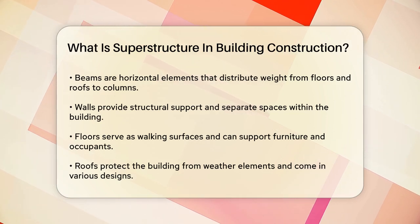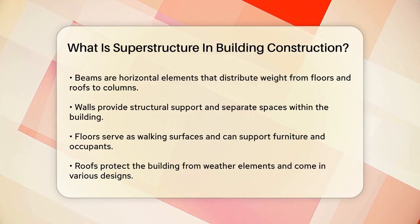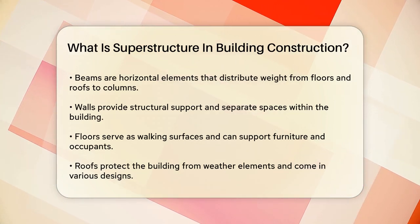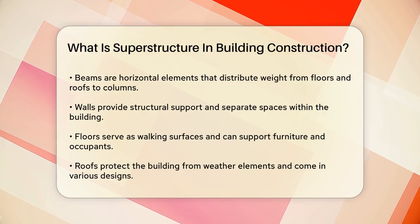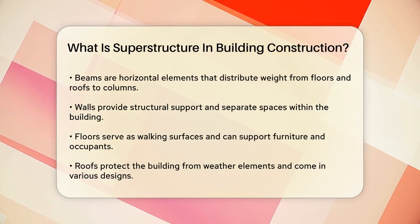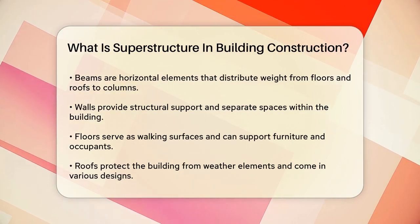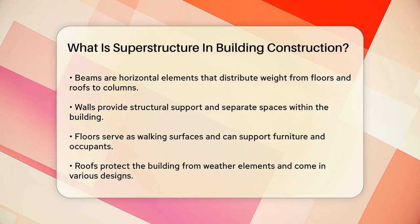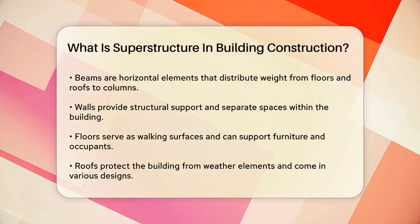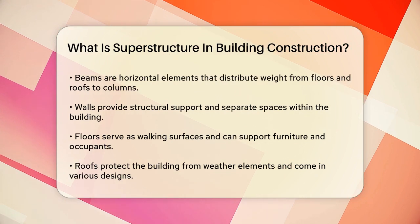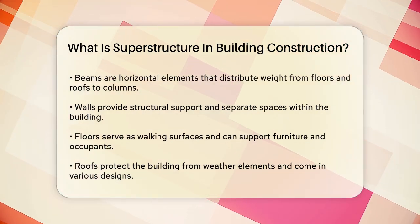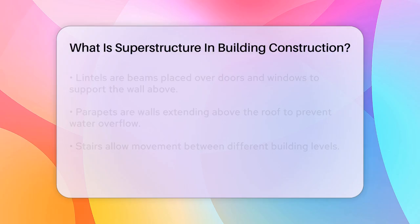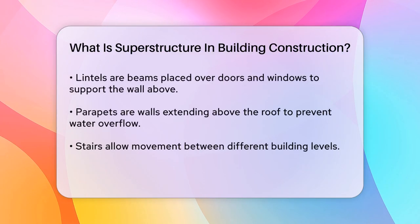Walls are another essential part of the superstructure. They can be made from masonry, concrete blocks, or even glass and aluminum for curtain walls. Walls not only provide structural support, but also divide the building into different rooms and spaces.